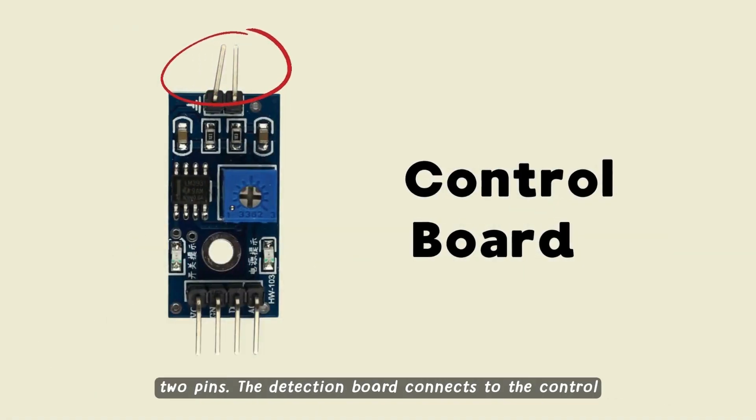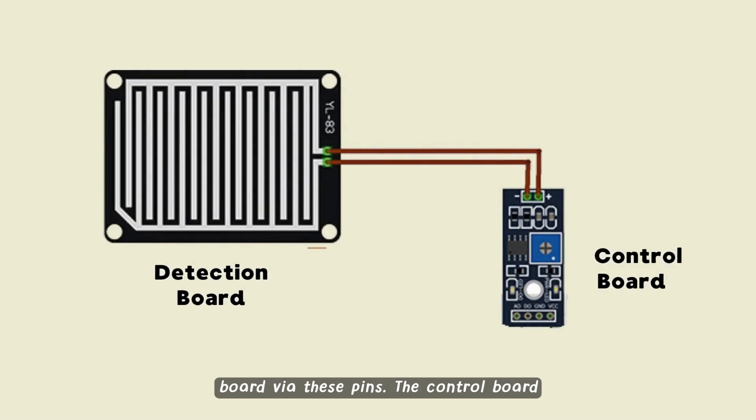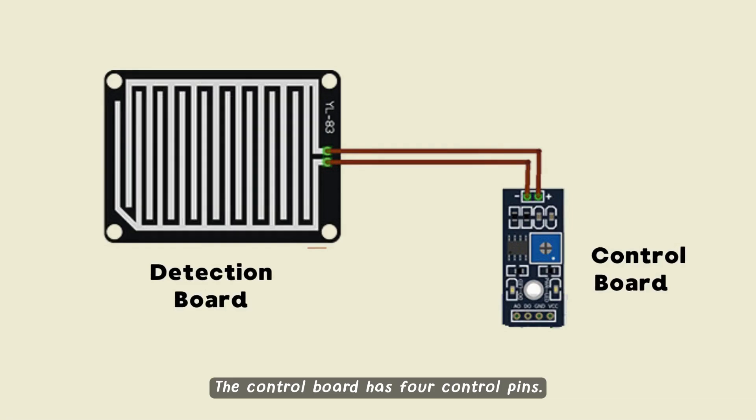The control board has two pins. The detection board connects to the control board via these pins. The control board then detects the voltage change and sends the sensor data through the analog pin.